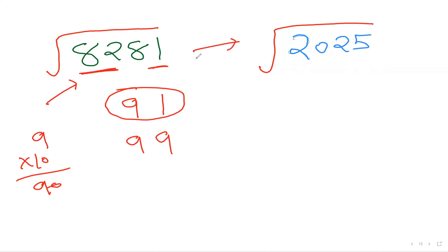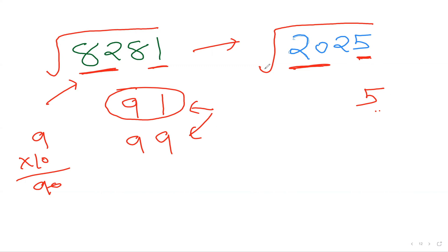Here's a special case: when the last digit is 5, we only get one candidate. 5² = 25 ends in 5, and 10 − 5 = 5, so the other number is also 5 — only one option. For example, with 2025: last digit is 5, so the answer ends in 5. Remove last two digits, leaving 20. 4² = 16, 5² = 25 — too big, so use 4. The answer is simply 45.